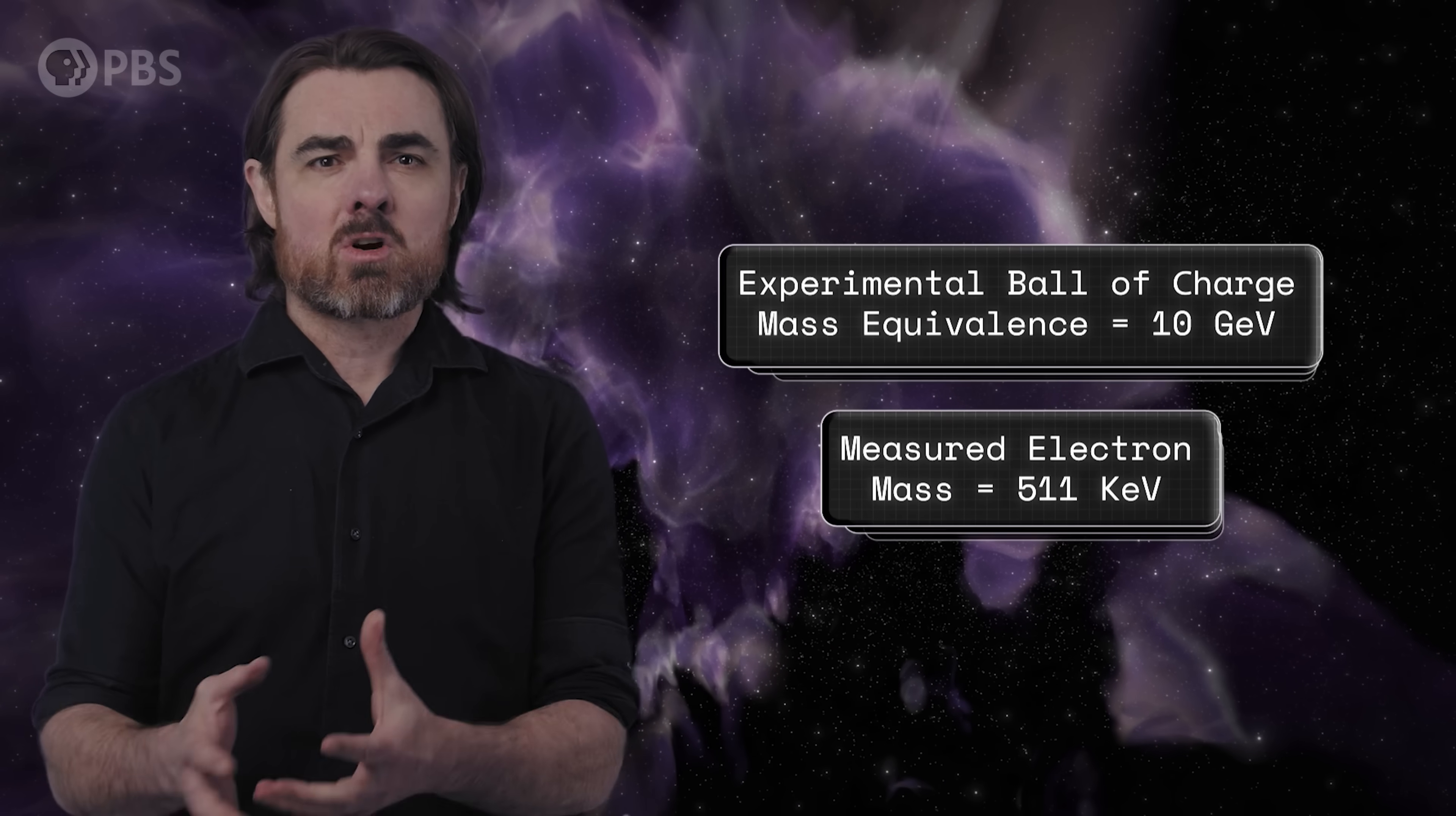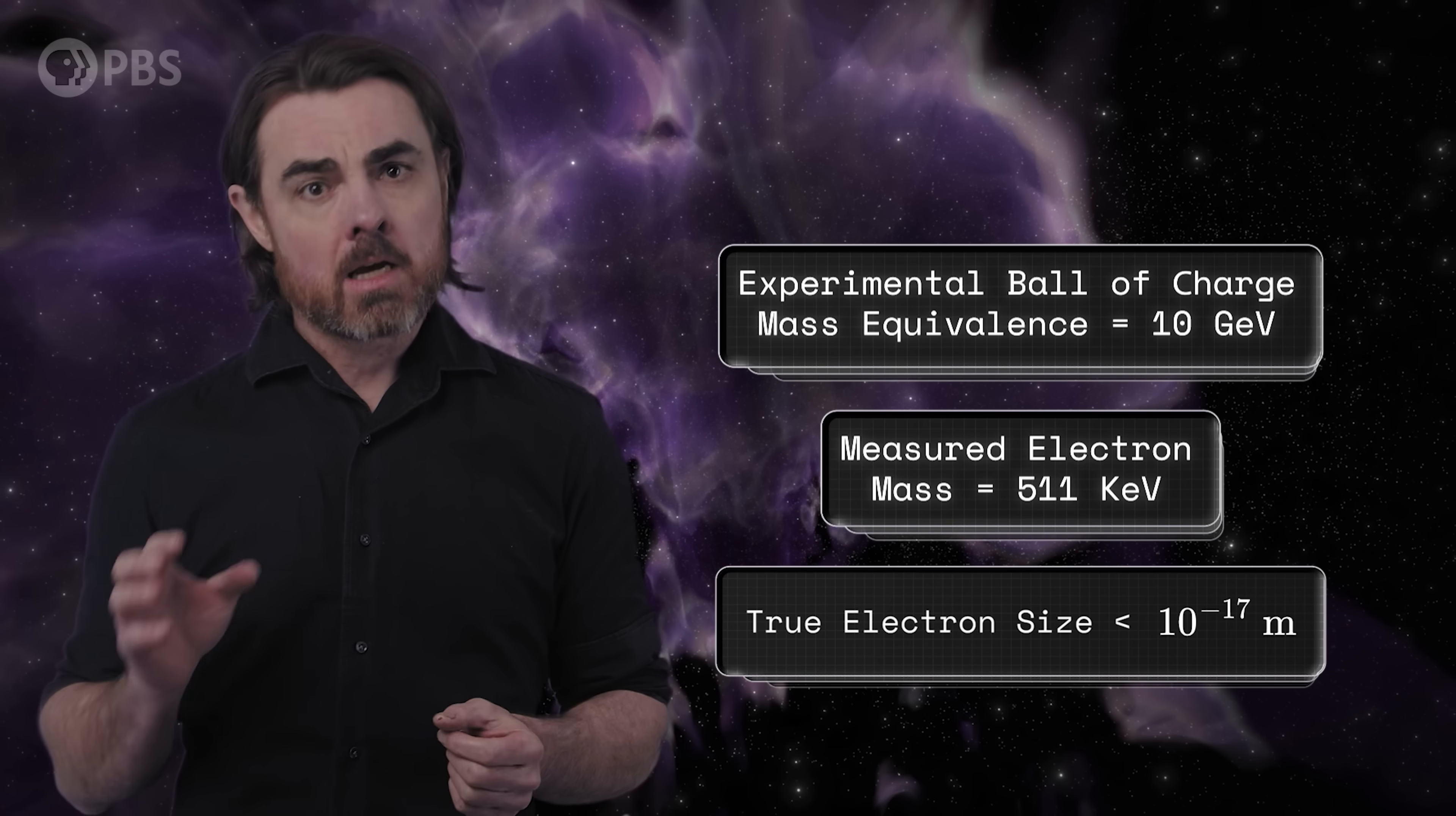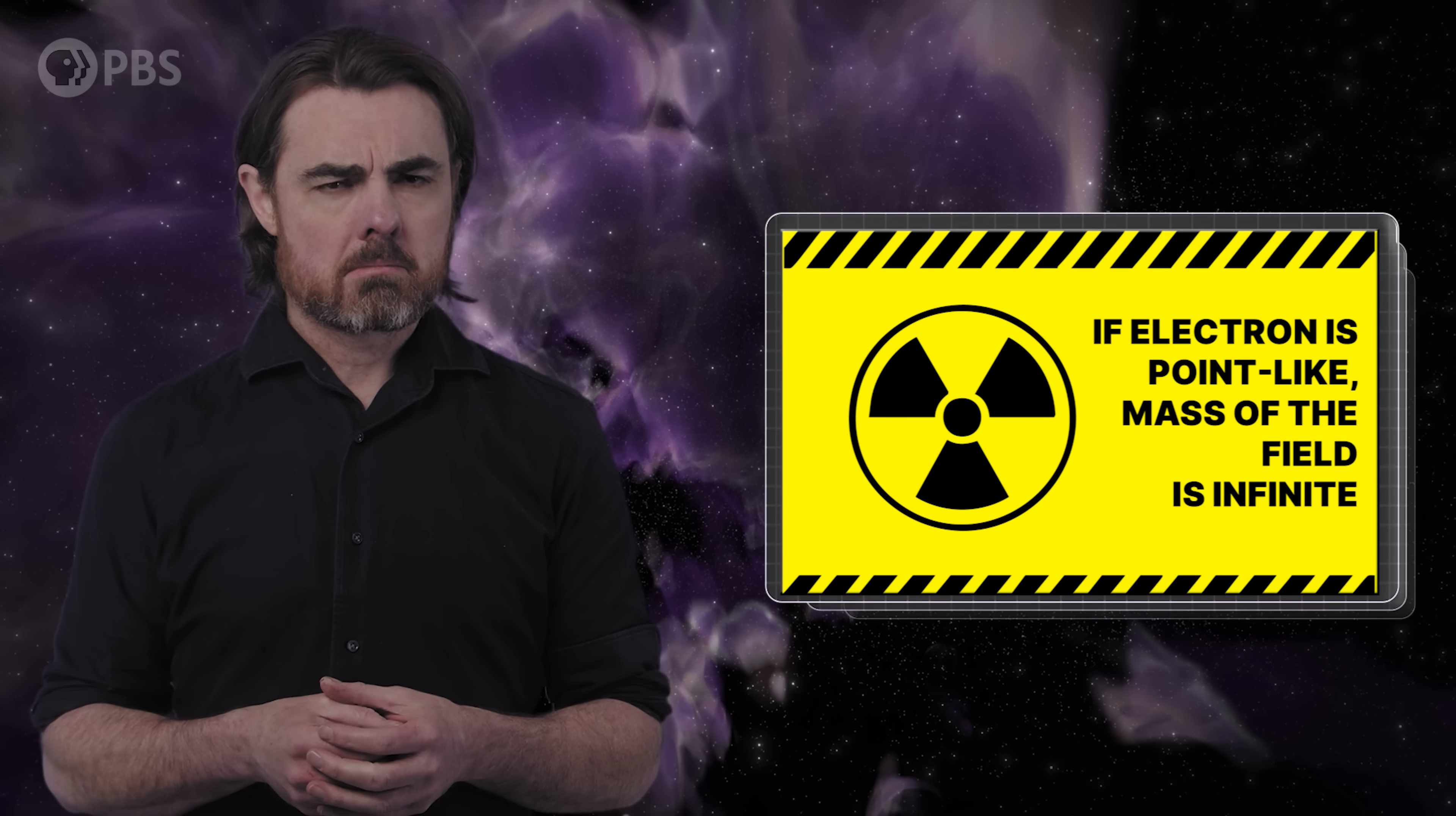But this issue also exists in classical physics. We saw last time that the potential energy in an electron's classical electric field has a mass equivalent 20,000 times larger than the measured mass of the electron itself. And that's assuming that an electron is as large as it could possibly be, according to our best measurements, at around 10 to the power of minus 17 meters. And if the electron is really point-like, then the mass of the field is infinite.